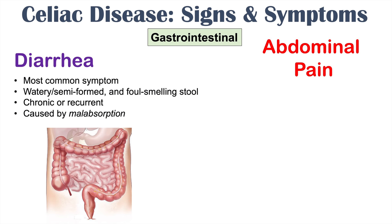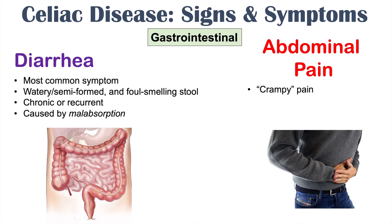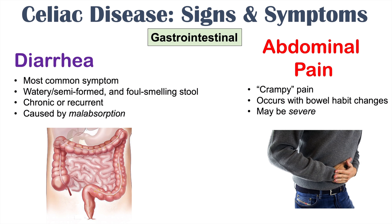Abdominal pain is another very common symptom of celiac disease. It is described as a crampy pain that occurs with bowel habit changes. This abdominal pain can range in severity but is often severe for patients, co-occurring with the watery diarrhea.